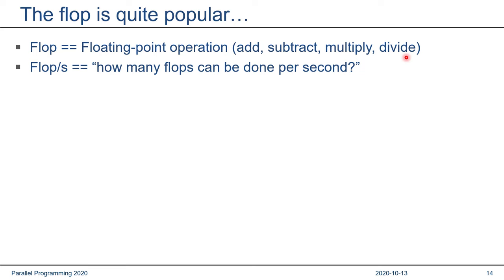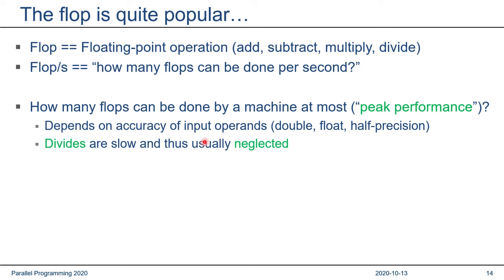Peak performance depends on many things, especially the precision of the input operands. Nowadays, typically the single-precision performance is twice as high as the double-precision performance in modern processors. When quoting peak performance, divides are often neglected because they are so slow that they don't contribute a major part of overall performance.